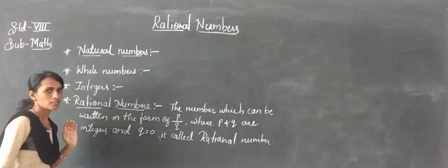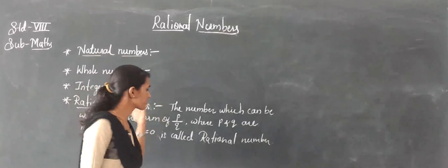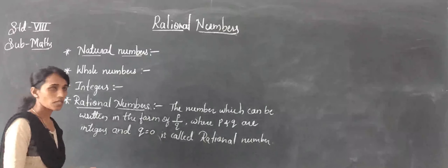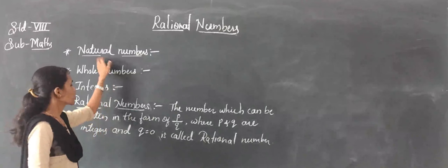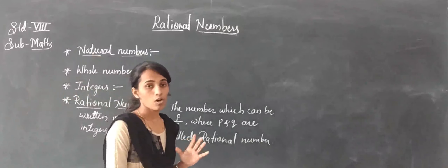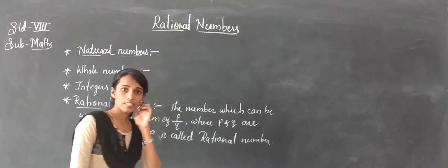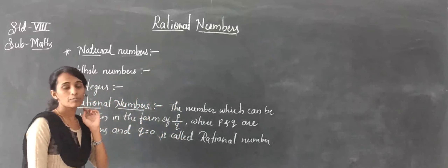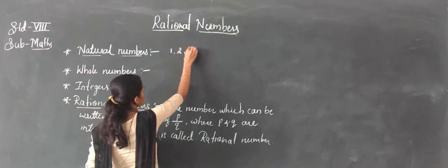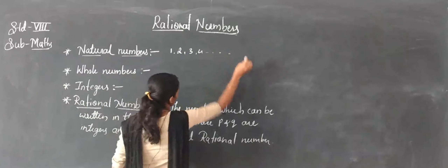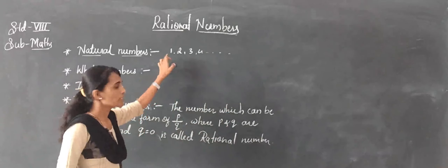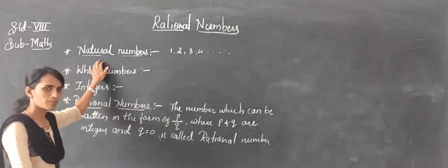From the fifth standard onwards we are studying about natural numbers, whole numbers, integers, and rational numbers. Natural numbers are all the counting numbers except 0 — that means 1, 2, 3, 4, and so on. The numbers are infinite and uncountable, but 0 is not counted among the natural numbers.